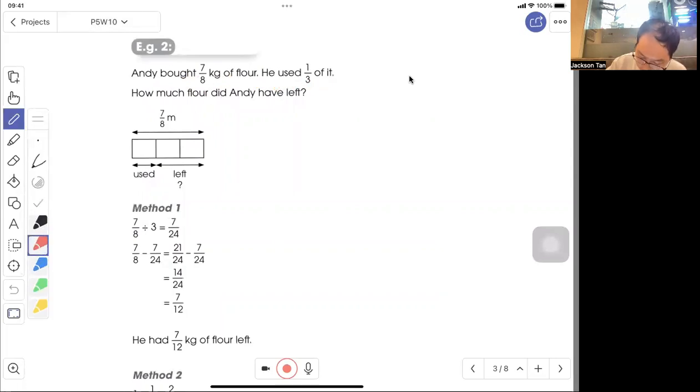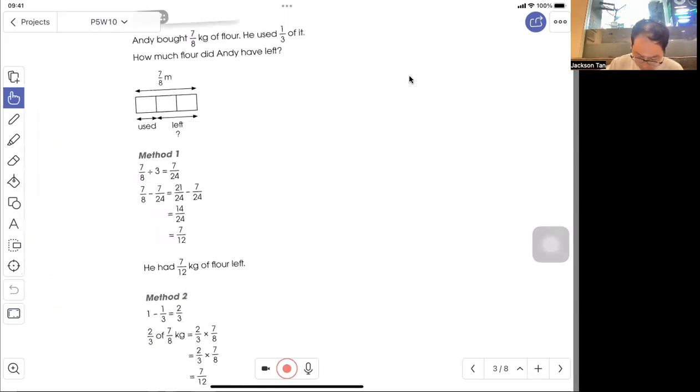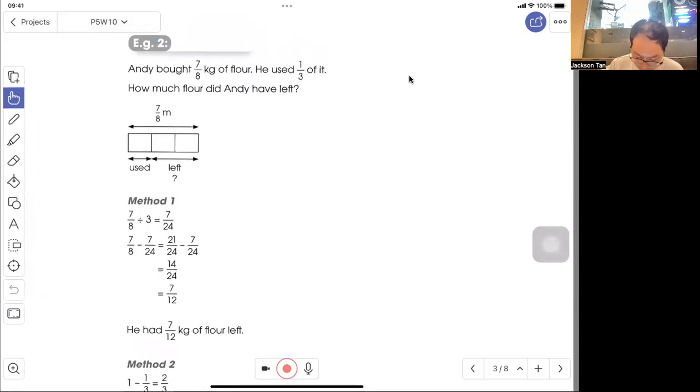You can use the shortcut with 1/3 × 7/8. Or if you want to use a model with 7/8 divided by 3, that also works. Find what he used, then subtract from the whole to get what's left. He has 7/12 kg of flour left.